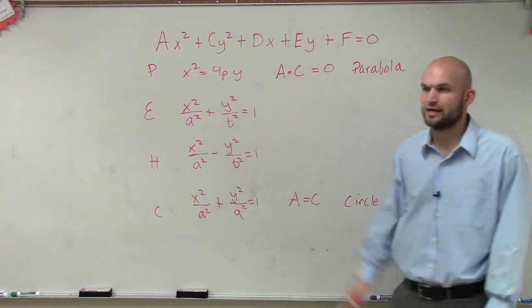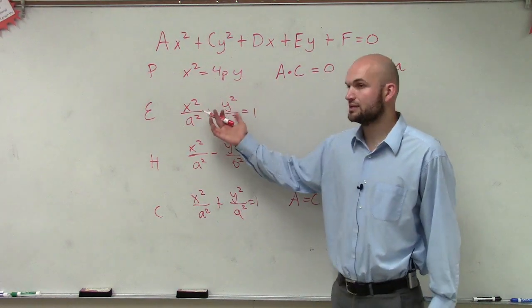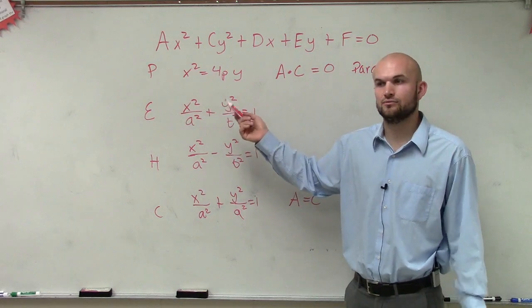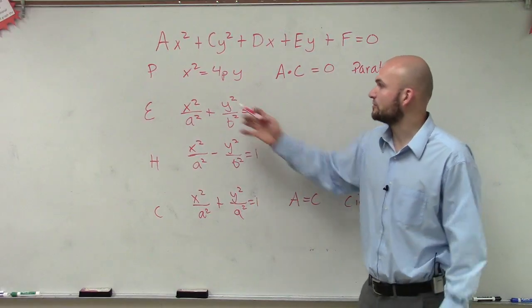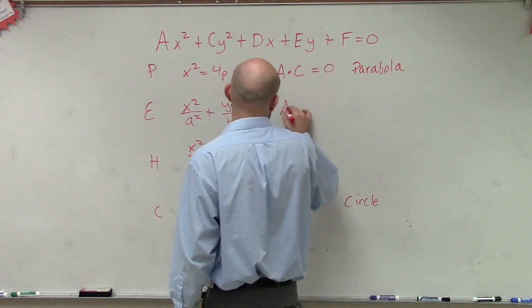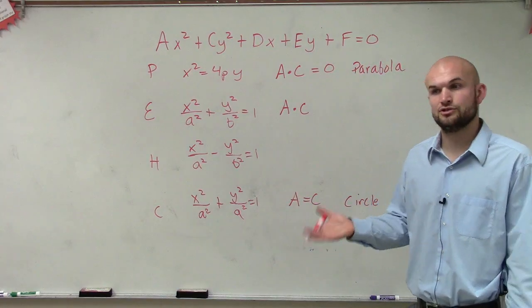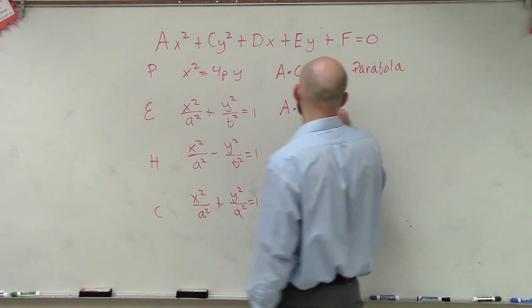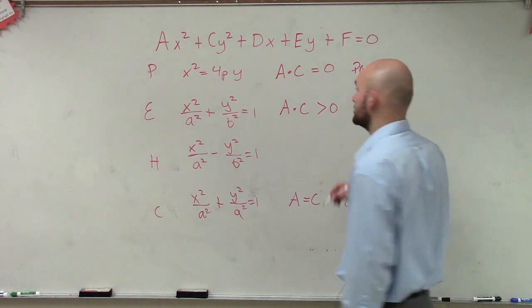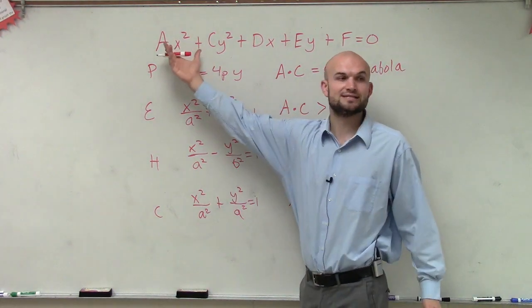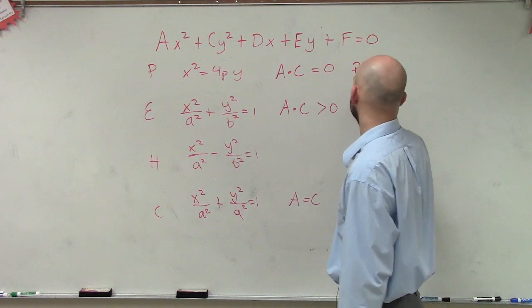Now let's look at an ellipse and hyperbola. Notice that for an ellipse, we're always adding — we're adding the x squared and the y squared terms. So if you multiply a times c, that value has to be greater than 0, because two positive numbers will always give a product greater than 0. So if you multiply a times c and it's greater than 0, then you have an ellipse.